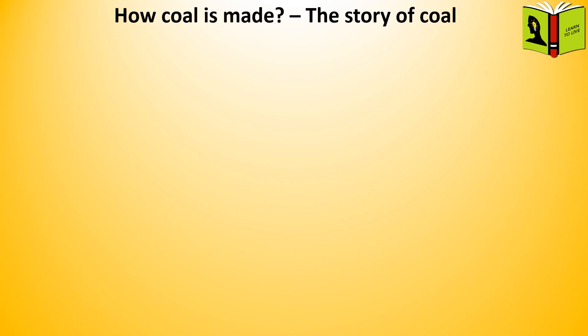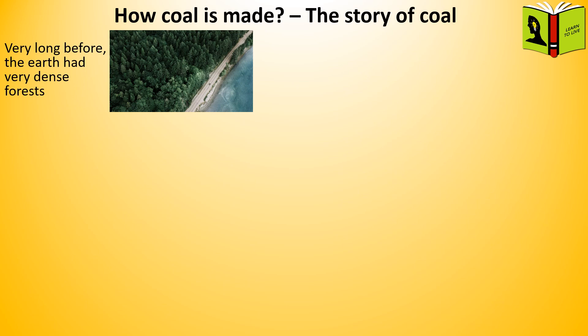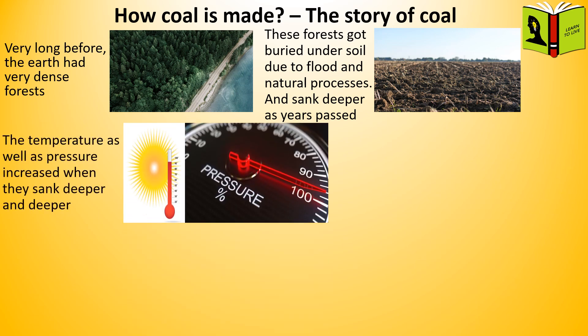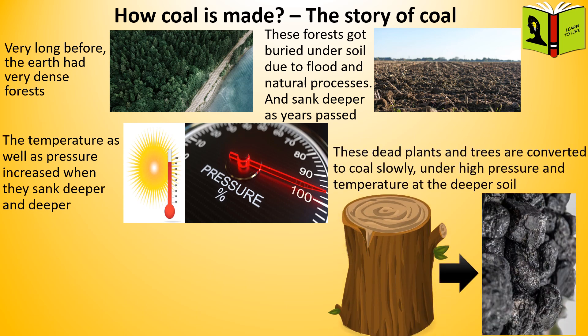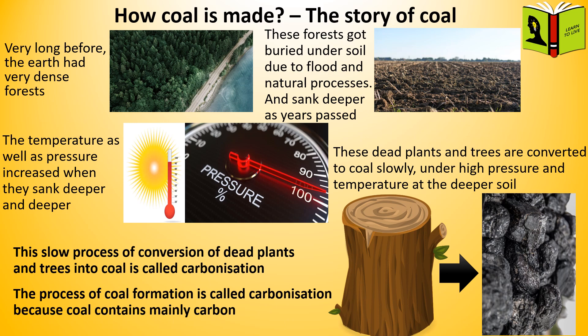How coal is made — the story of coal. Very long ago, the earth had very dense forests. These forests got buried under soil due to floods and natural processes, and sank deeper as years passed. The temperature as well as pressure increased when they sank deeper and deeper. These dead plants and trees are converted to coal slowly under high pressure and temperature at the deeper soil. This slow process of conversion of dead plants and trees into coal is called carbonization, because coal contains mainly carbon.